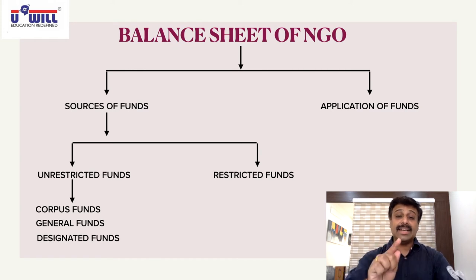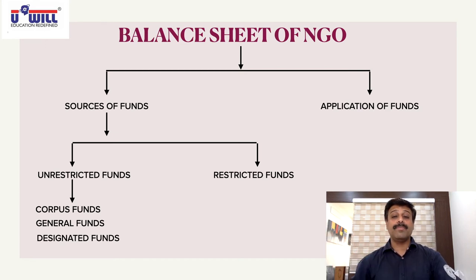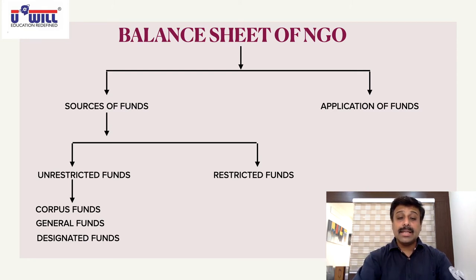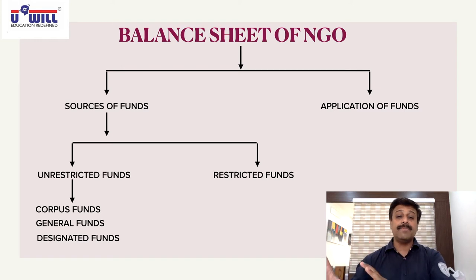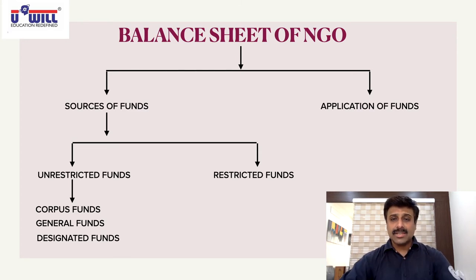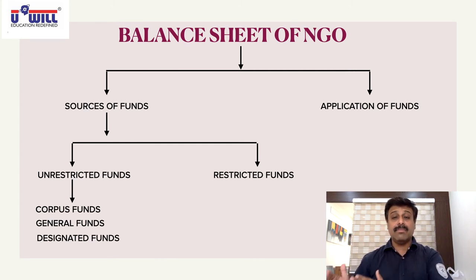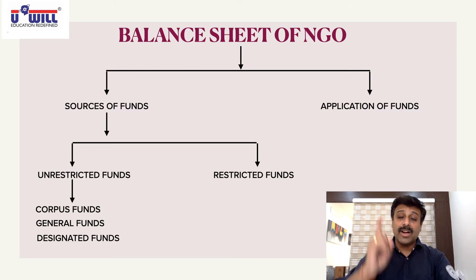Then we have designated funds, also called earmarked funds — they are to be used for a specific purpose in the future. They differ from restricted funds: in restricted funds, the donor gives terms and conditions; here, the NGO itself keeps aside some money for a specific purpose, like a reserve or provision. For example, if the NGO sets aside money to construct a sports hall, that fund will be used for it in future — but if needed, can be used elsewhere.